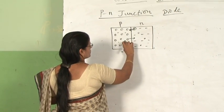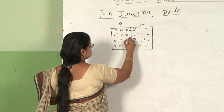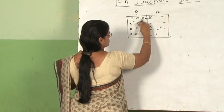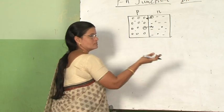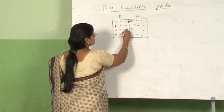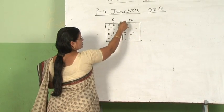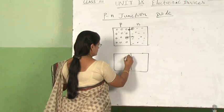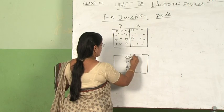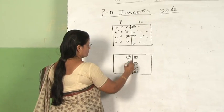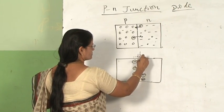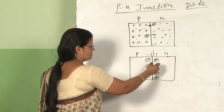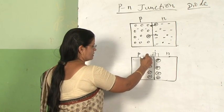Similarly, when holes diffuse from the P-region to the N-region, they leave behind immobile negative ions. As more charge carriers diffuse, immobile ions accumulate on both sides of the junction, creating a situation like a fictitious battery connected across the junction, with its negative terminal on the P-side and positive terminal on the N-side.